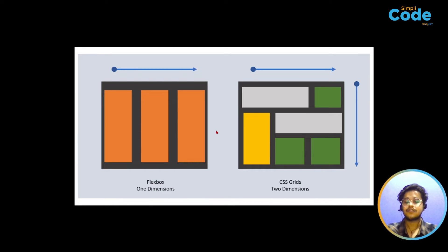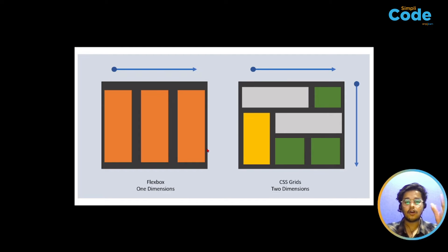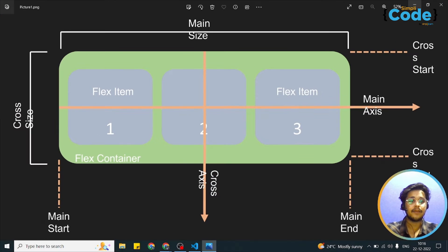This is what makes CSS Grids more useful in certain cases, though it depends on your needs. CSS Flexbox is for one dimension — you lay out HTML elements either horizontally or vertically. CSS Grid can do both simultaneously, and that is the basic difference between them.